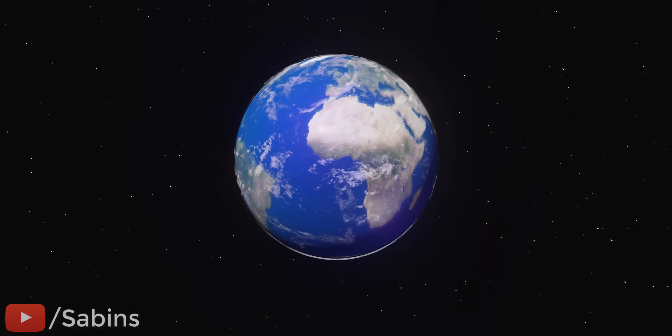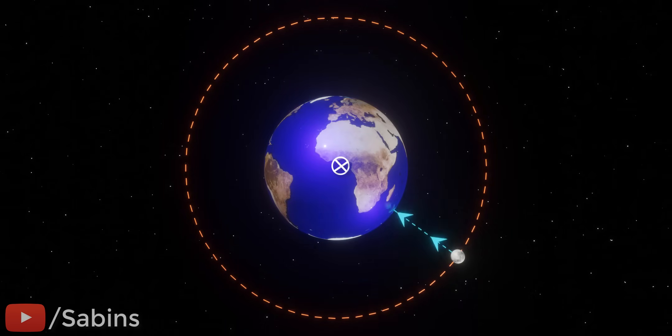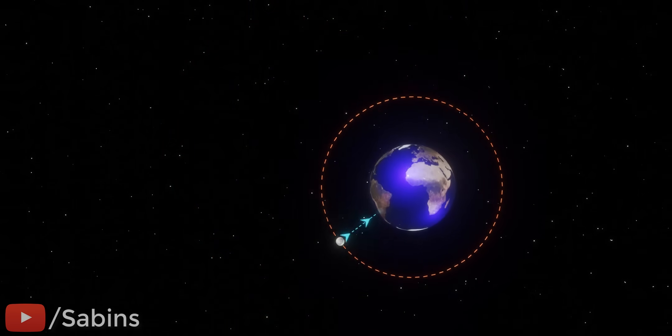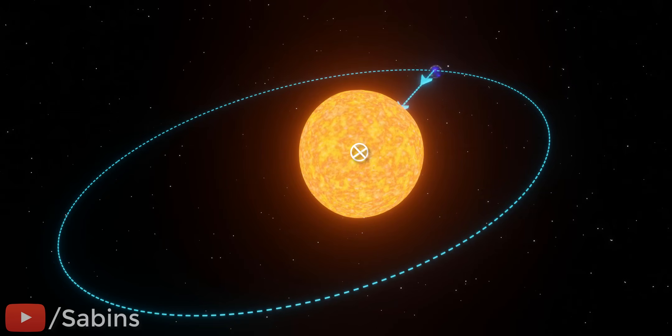It's logical to conclude that, in a similar way, the Earth is pulling the Moon radially towards its center with an attractive force. Similarly, the Sun as well is attracting the Earth towards its center with a certain force.